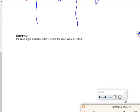So it says if theta is an angle such that cot theta is 3, find the exact value for cot 2 theta. I haven't got a formula for cot 2 theta, but I do know that cot 2 theta is 1 over tan 2 theta. So what I'm going to do is find tan 2 theta.